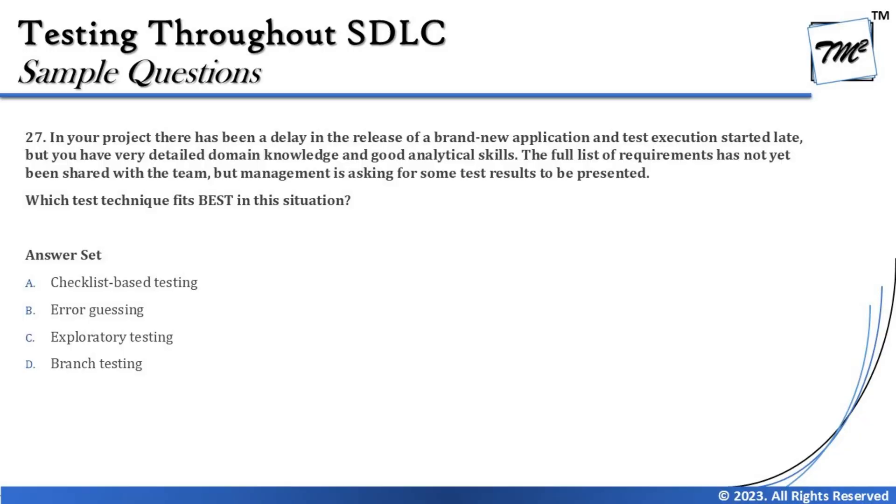Two of those criteria are clearly present in this scenario: you are running late with the release, and the specifications have not been given to you. The third element — management asking for results — is also relevant, because one experience-based technique, exploratory testing, uses a document called a test charter, which documents what was done and how much testing was performed at a high level. Error guessing and checklist-based testing also have documentation, but checklist is limited to questionnaires and is not as result-oriented as exploratory testing.